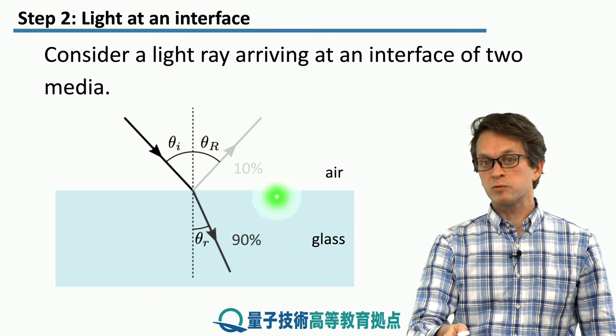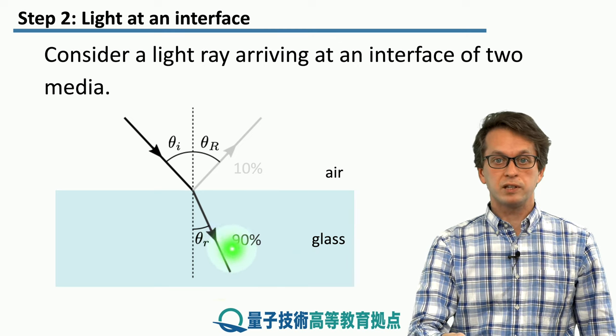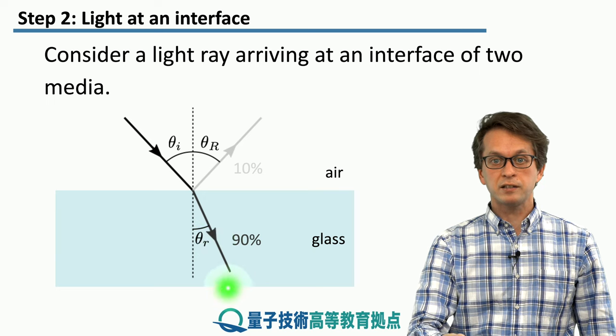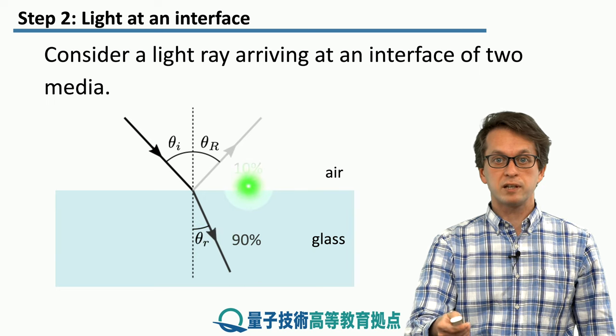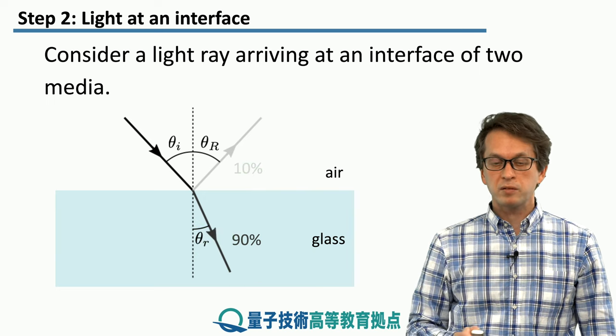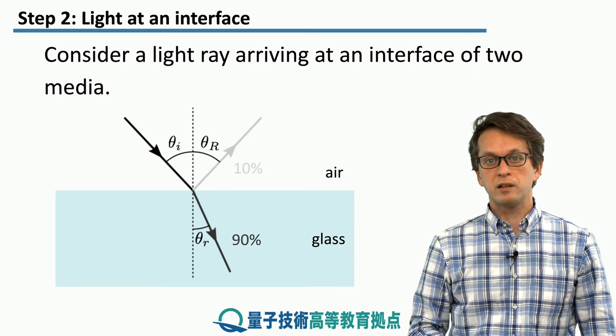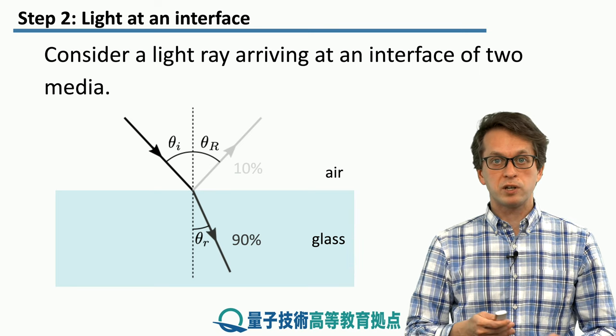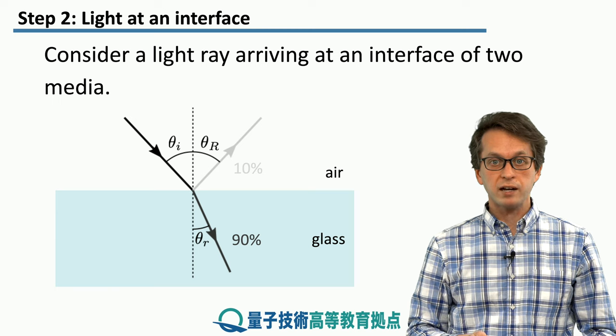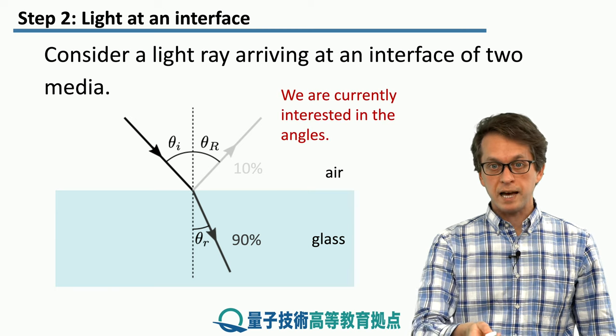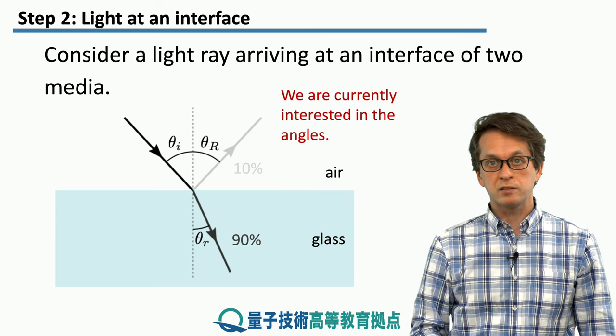For example, 90% of the light is refracted and enters the glass, whereas 10% gets reflected back. But we're not going to be too interested in the relationship of how much gets reflected and how much gets refracted. We are more interested in the angles of reflection and angles of refraction.